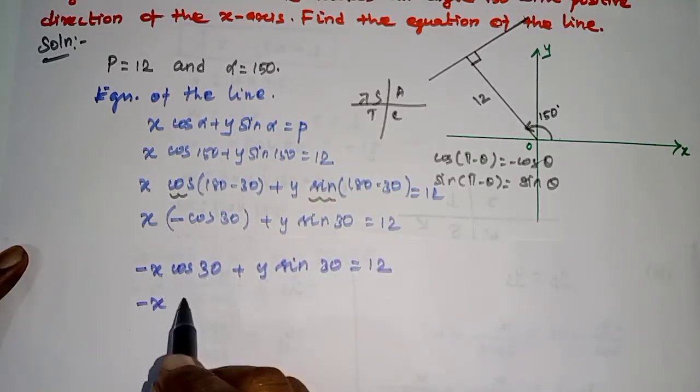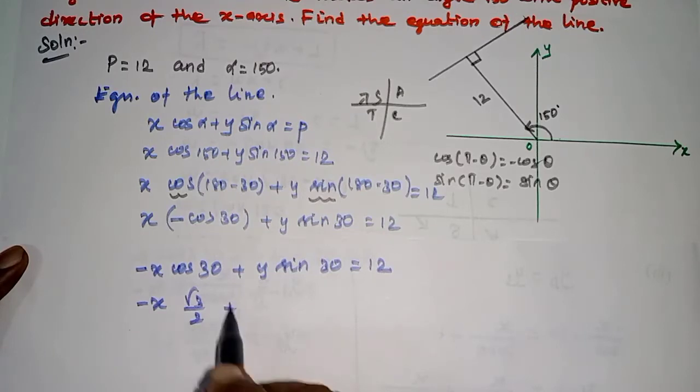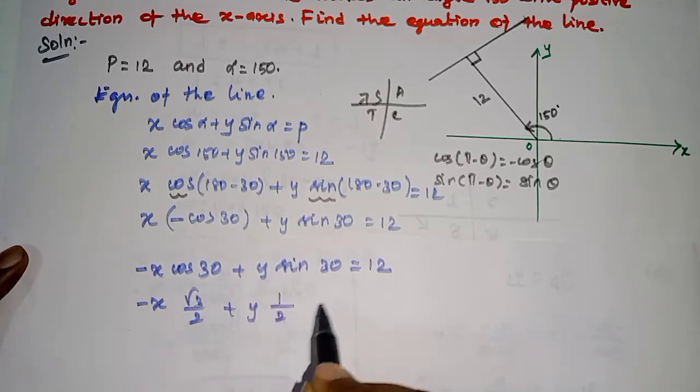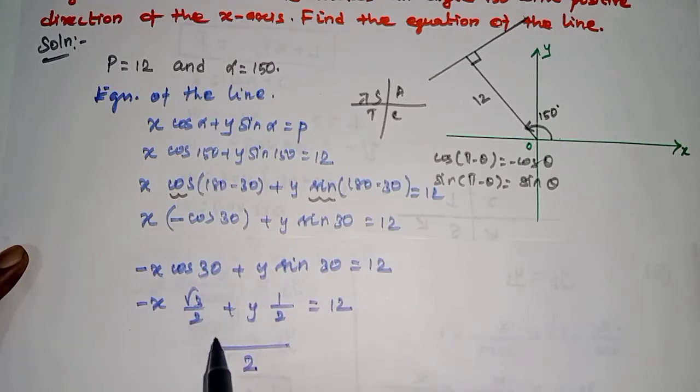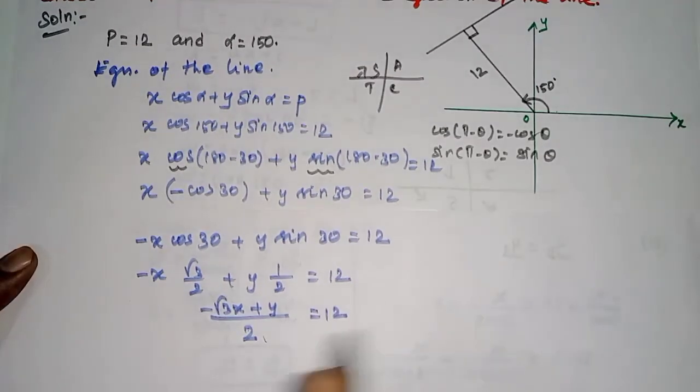minus x into cos 30, which is root 3 by 2, plus y sin 30, which is 1 by 2, is equal to 12. Taking LCM 2, minus root 3 x plus y is equal to 12.